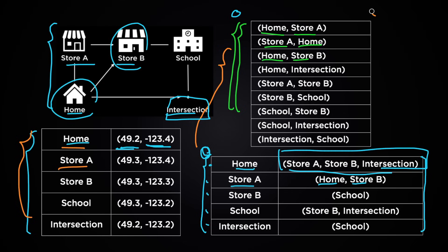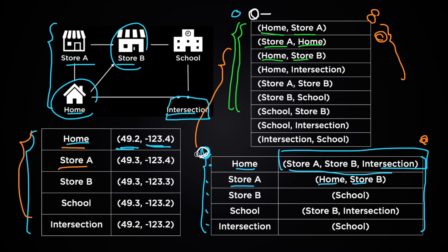These two methods are basically two different ways of storing exactly the same set of data, and as you can see they have sort of different structures. These are simplified examples of what data structures look like. The first method corresponds to the array or list data structure, and the second method corresponds to the hash table or hash map data structure.